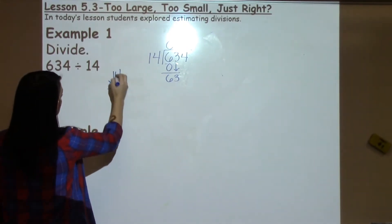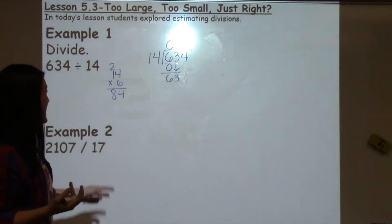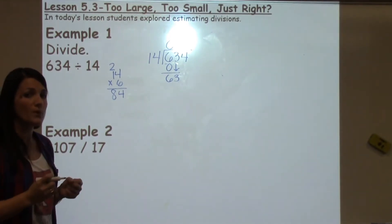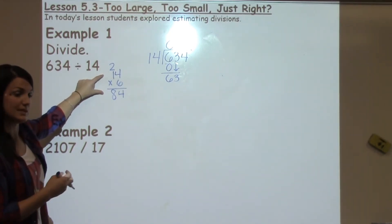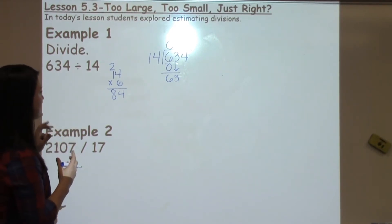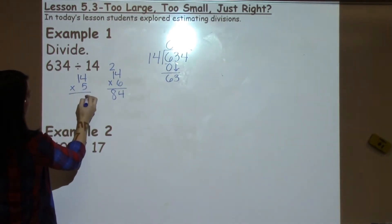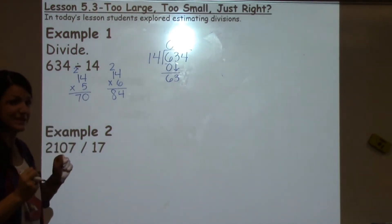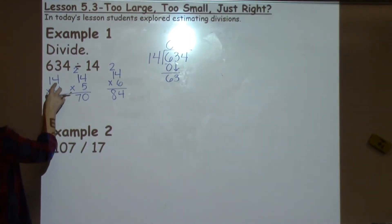So 6 times 4 is 24, and 6 times 1 is 6 plus 2 is 8 — giving 84. That's a little too big, so we need to get smaller. We always encourage students never to erase work they already did, because they might use it again later. So move it to the side. Now try 14 times 5: 5 times 4 is 20, 5 times 1 is 5 plus 2 is 7 — giving 70. Still just a little too much.